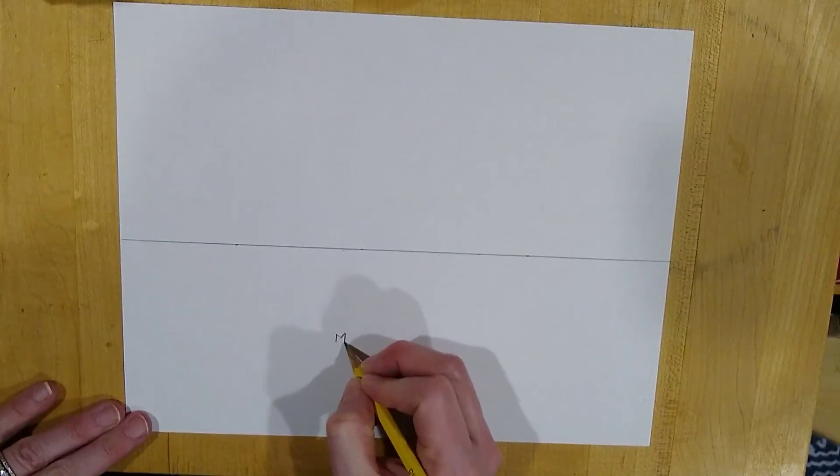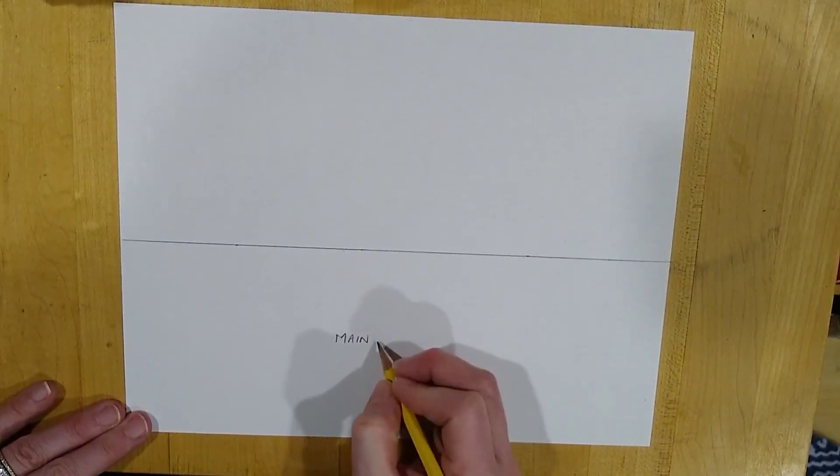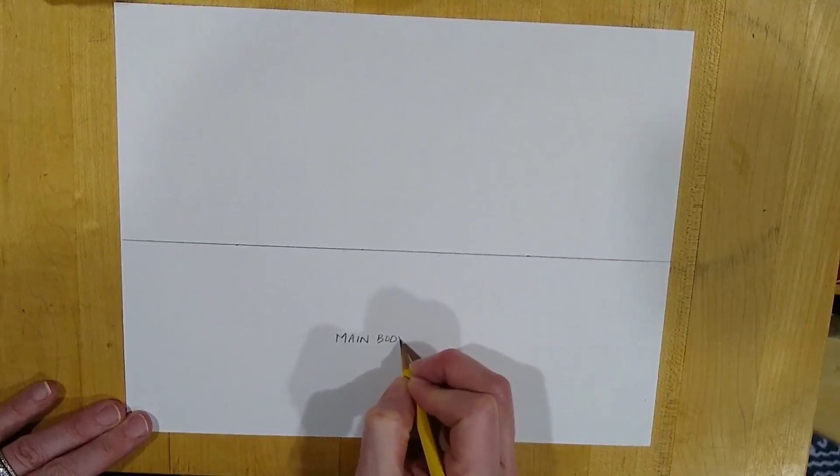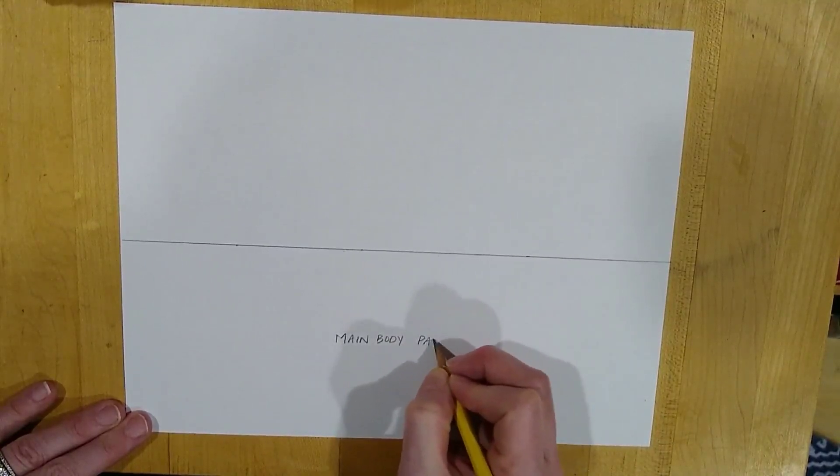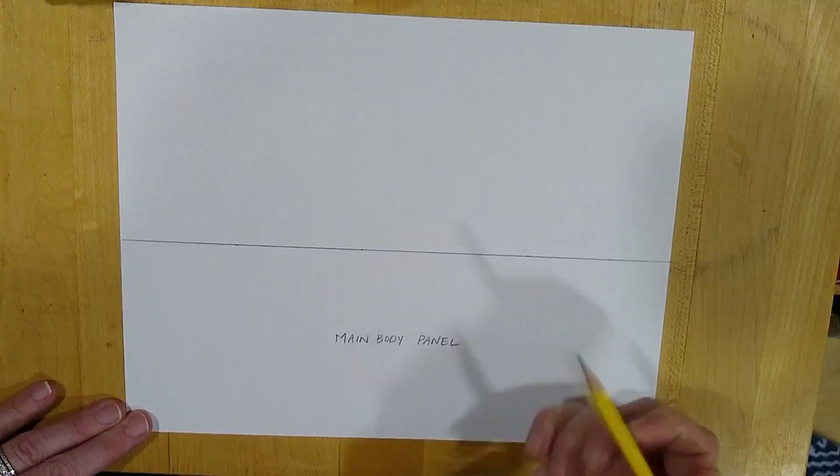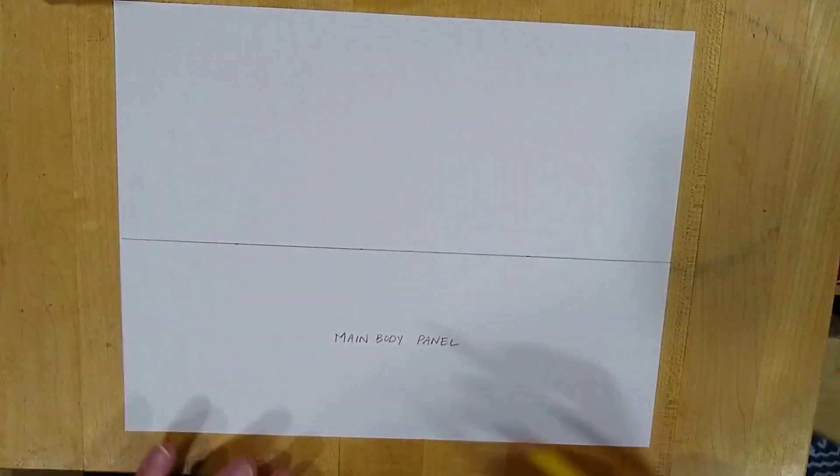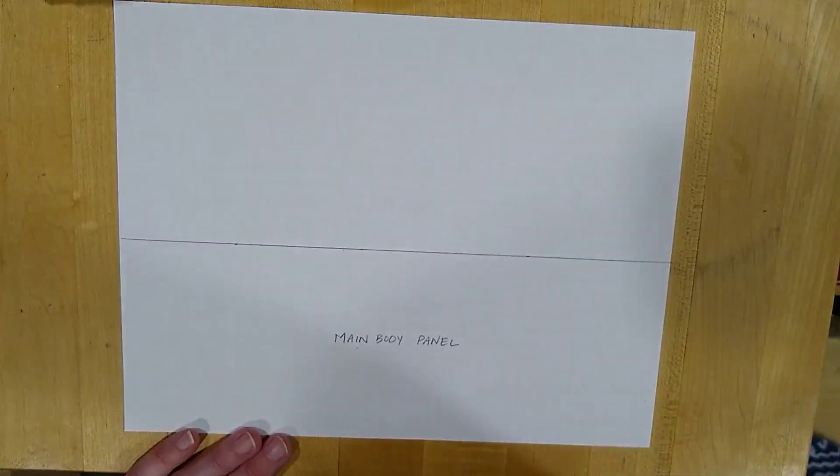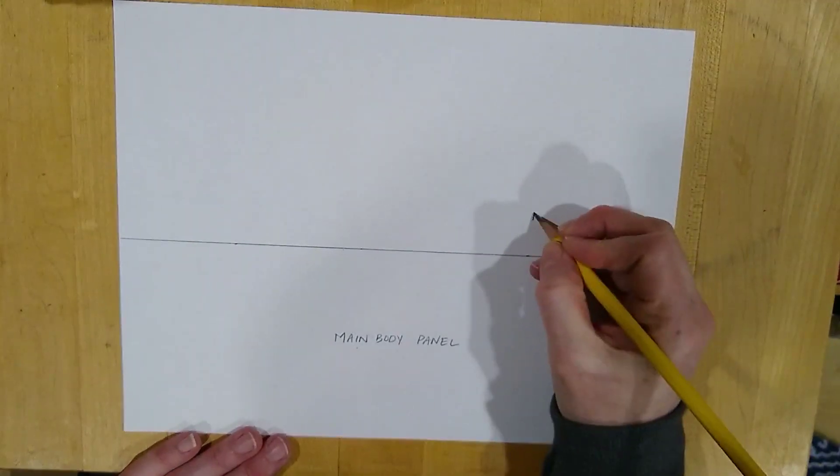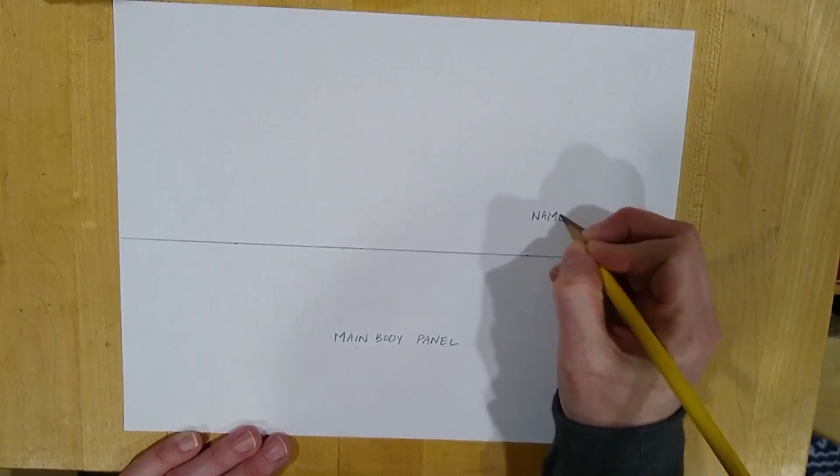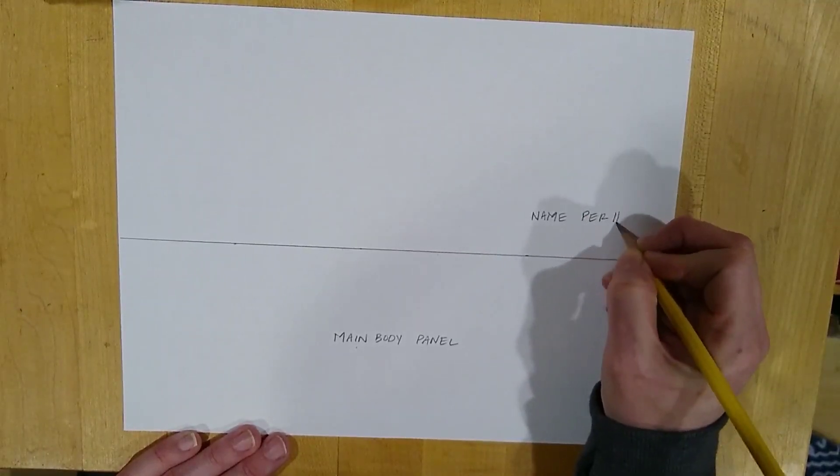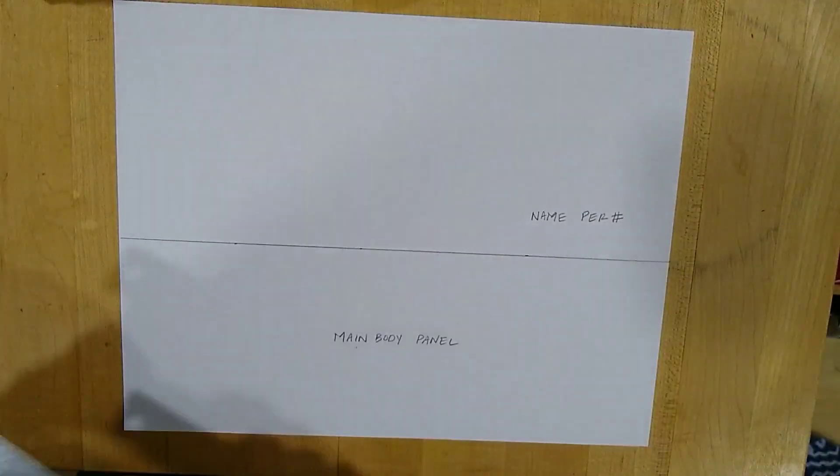I'm going to label this here, you should too, your main body panel. The reason we label this now is the other half of the paper is four and a half inches wide, but they look very similar. So we like to label this and make sure we cut off the correct one. And then up here, we're going to put your name and your period number.